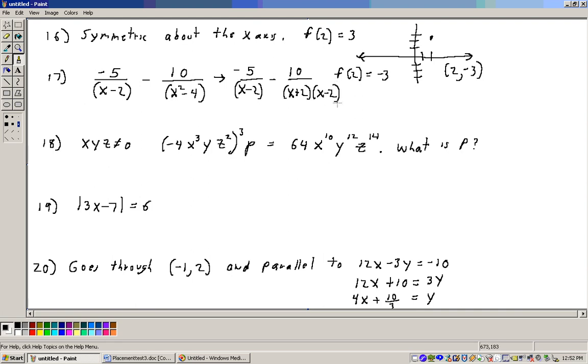Now, we need to get a common denominator here. And the common denominator is going to be x plus 2, x minus 2. So I'm going to write that down, x plus 2, x minus 2. And now we can just say to ourselves, what's in this common denominator that's not in this denominator? Well, an x plus 2.